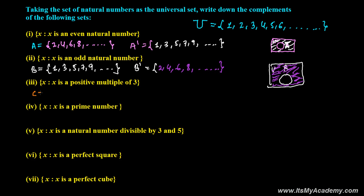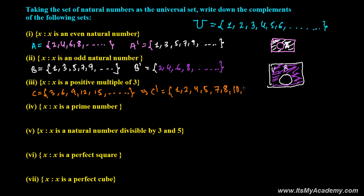Now set C, where X is a positive multiple of 3. The positive multiples of 3 are 3, 6, 9, 12, 15, and so on. So C complement means all natural numbers except those multiples of 3. So we write 1, 2, then 4, 5 — skip 6 — then 7, 8 — skip 9 — then 10, 11 — skip 12 — then 13, 14 — skip 15 — then 16, 17 — skip 18, and so on.